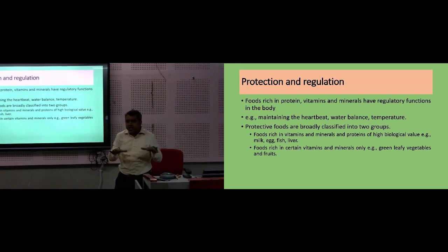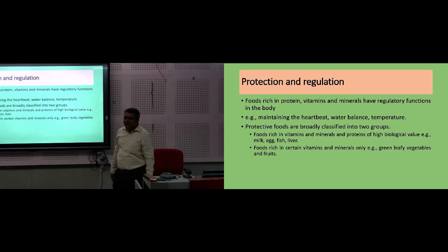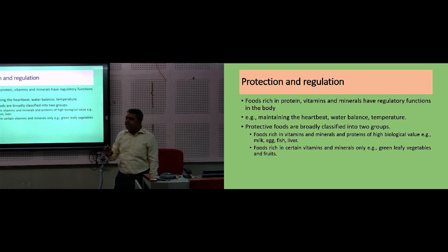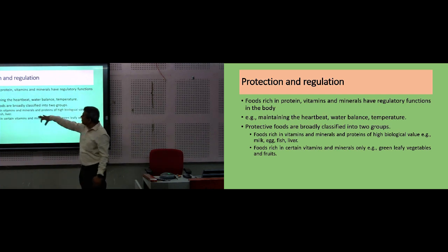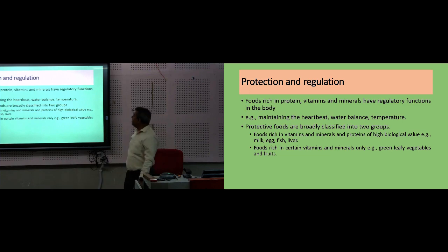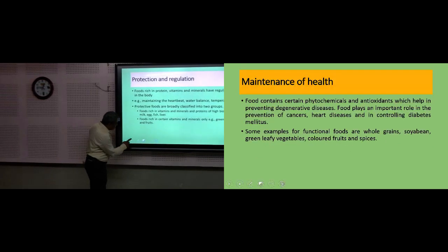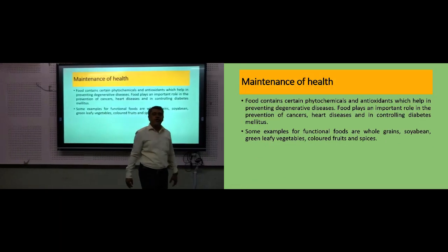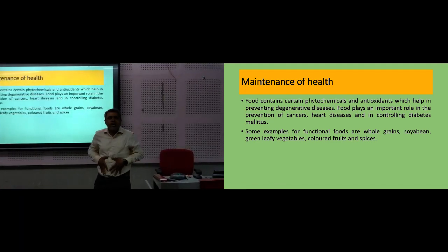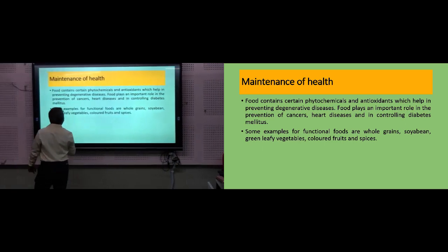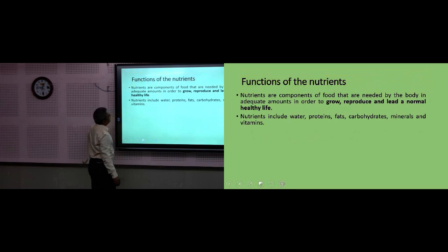Protection and regulation — simply eating food doesn't mean you are protecting yourself from various diseases. Certain chemicals are needed for that: vitamins and minerals are very essential. If a person does not eat vegetables daily, what will happen to their body — maintaining heartbeats, water balance, temperature? Protective foods are broadly classified into food rich in vitamins and minerals: green leafy vegetables, other vegetables, milk, and egg. High biological value means if you eat 100 grams of food material and 70% is utilized, then the biological value is 70%.